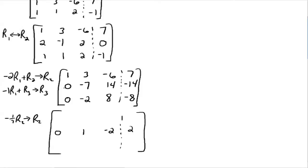Using this new one in row two, we want to make the other two entries in that column zero. To make the three in row one a zero: negative three times row two plus row one gives a new row one. Negative three times zero is zero plus one equals one. Negative three times one is negative three plus three equals zero. Negative three times negative two is six plus negative six equals zero. Negative three times two is negative six plus seven equals one.